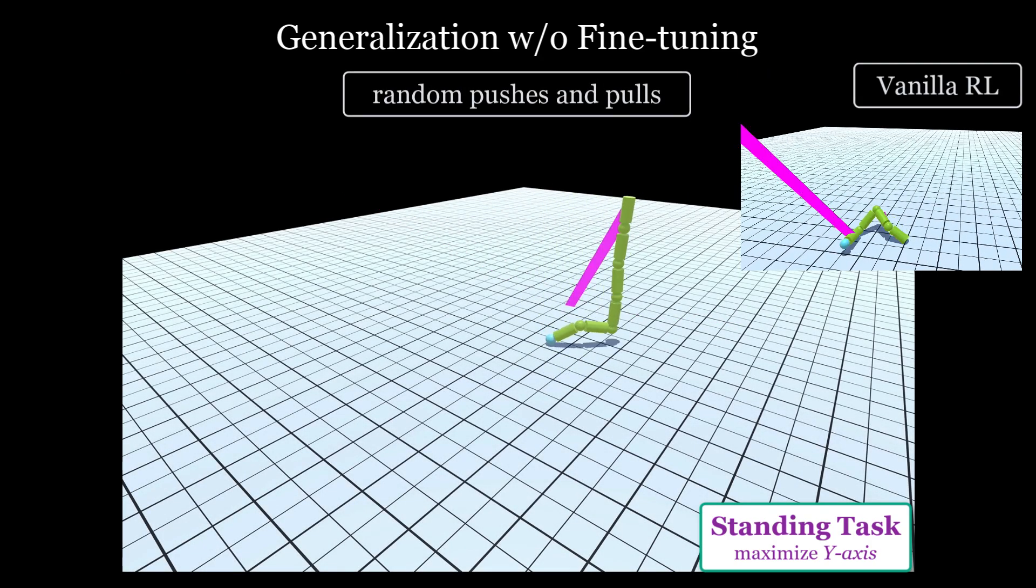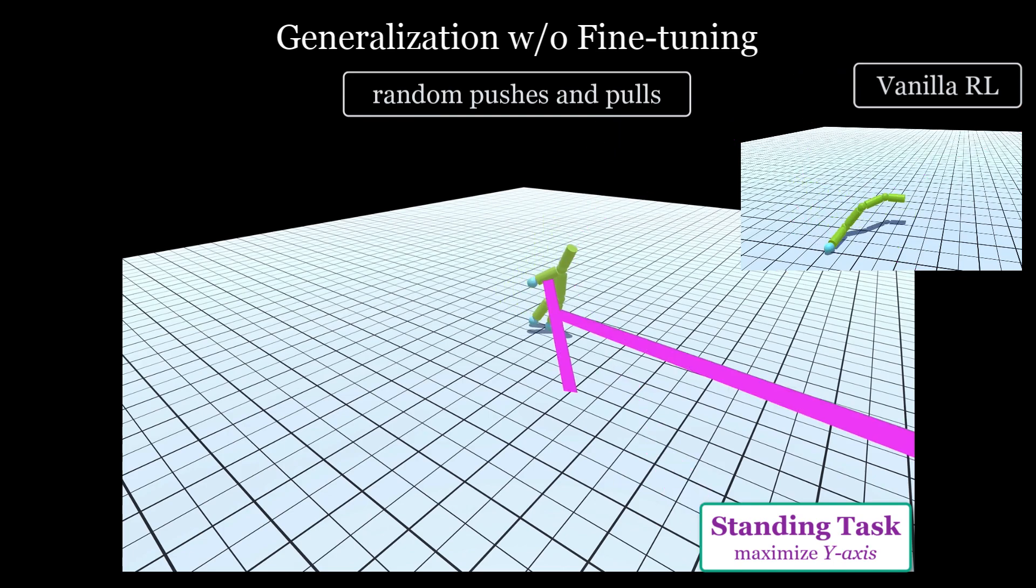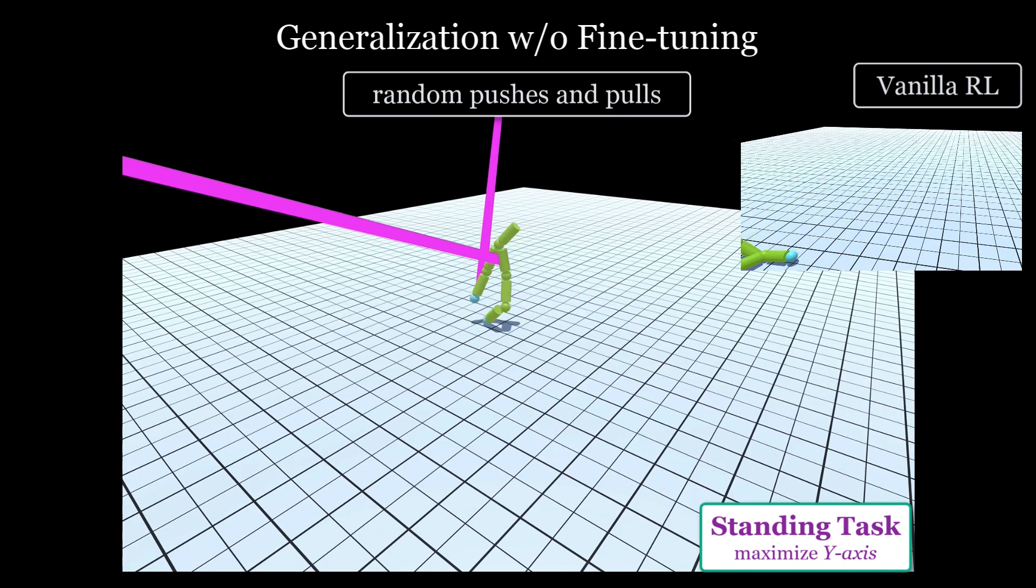The learned policy is also robust to random pushes and pulls. As seen on the top right, vanilla RL doesn't really generalize as well to this setting.